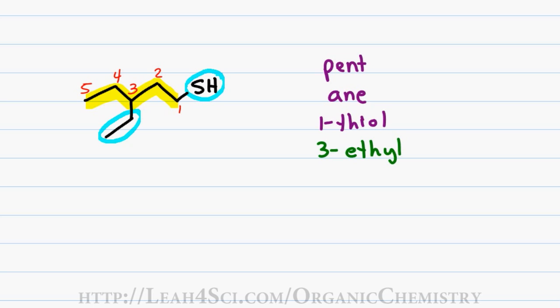Putting this name together I start with my substituent followed by the first name, last name and then the functional group. This gives me a final name of 3-ethyl-1-pentanethiol.